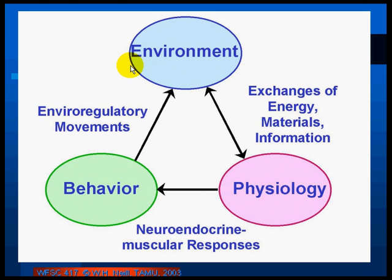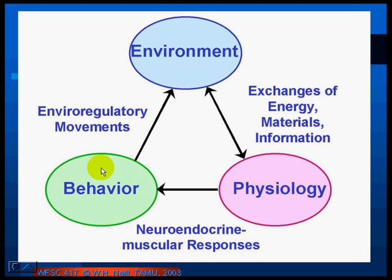This is the way I see the relationships. Environment is linked to physiology of the individual fish through exchanges of energy, materials, and information — and those exchanges go both ways. The physiology, in turn, dictates certain behavioral responses on the part of the fish. An important subset of that behavior feeds back to affect future environment. These I call enviro-regulatory movements, or perhaps better known as habitat selection behavior.